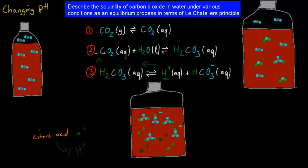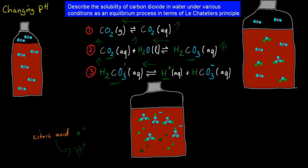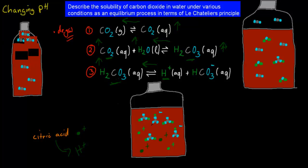Once carbonic acid increases, the second reaction also shifts in reverse, increasing aqueous carbon dioxide and water. That in turn leads to an increase in the gaseous carbon dioxide. So this is the exact opposite of what happened when we changed the pressure. If we add more hydrogen ions — decreasing pH — the system goes in reverse, which we call degassing, because more CO₂ gas is produced and less remains dissolved.